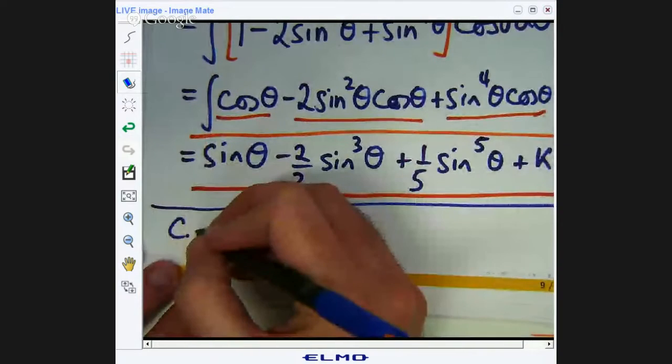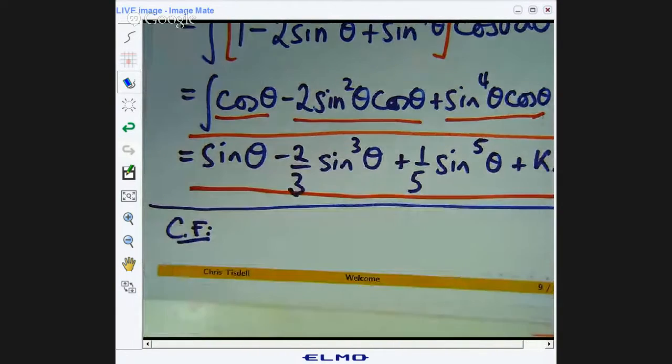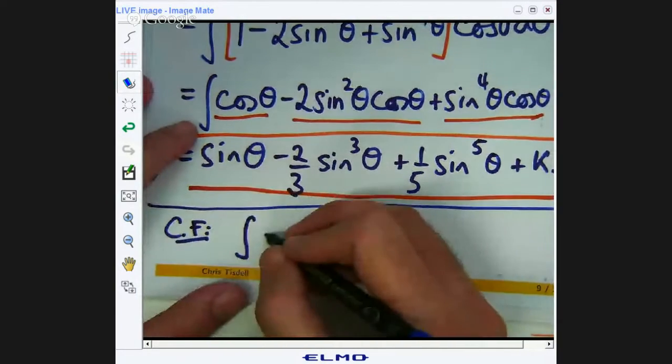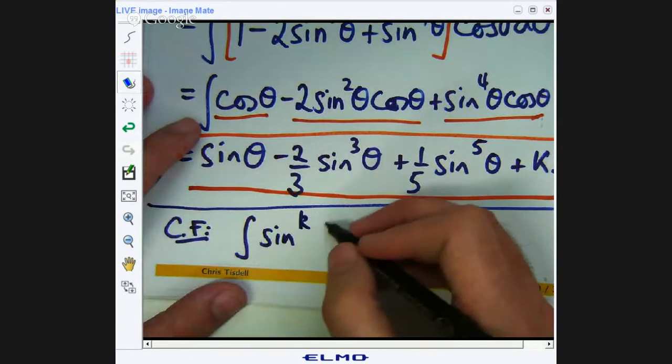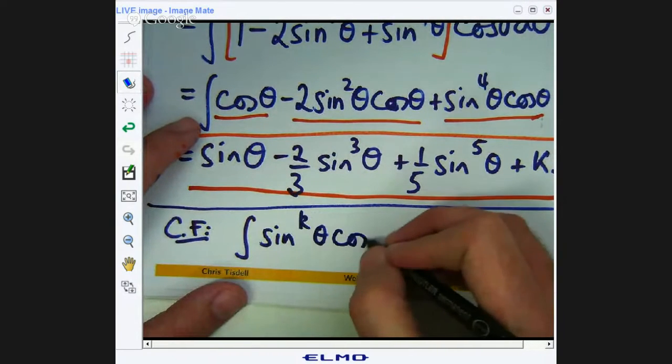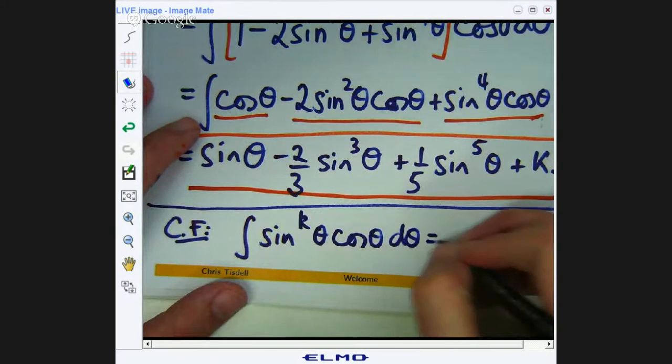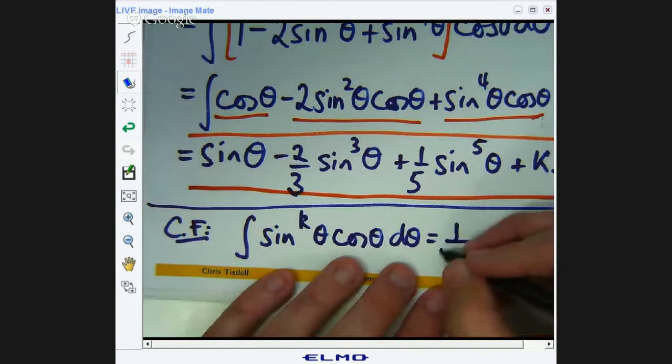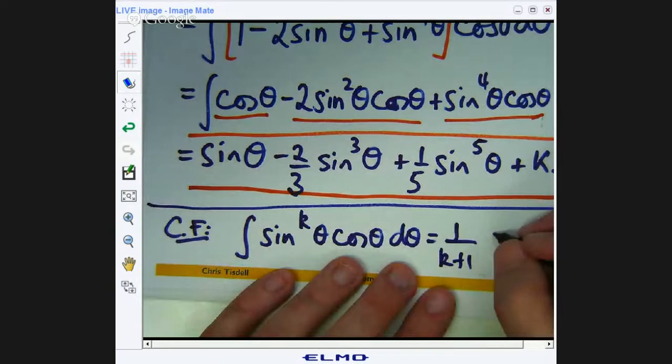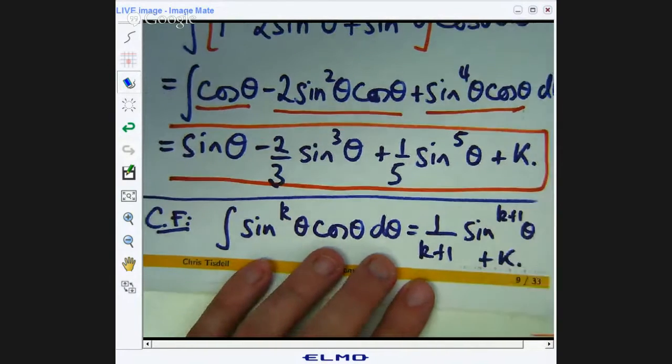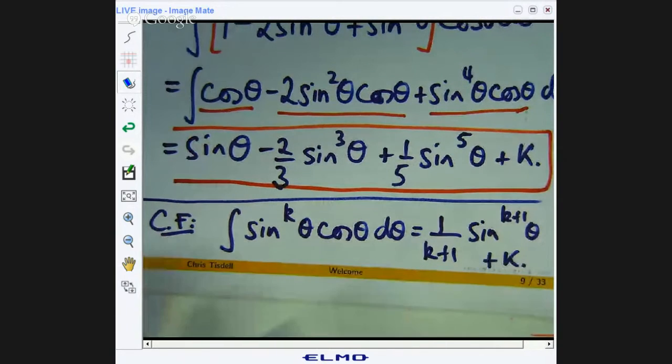It comes from the integral, let's say k is a power. This is an identity. Now, you might think, well okay, I'm still not impressed, Chris. Where does that come from? Well, you can prove the bottom identity just by substitution.